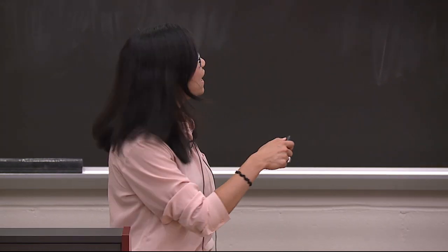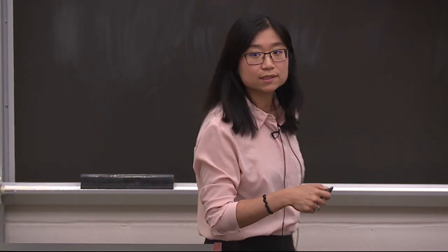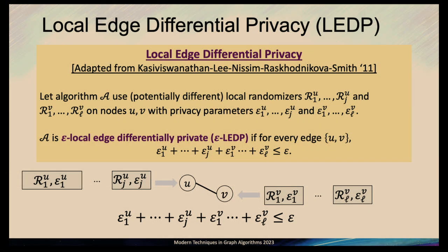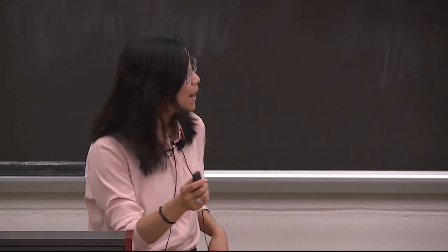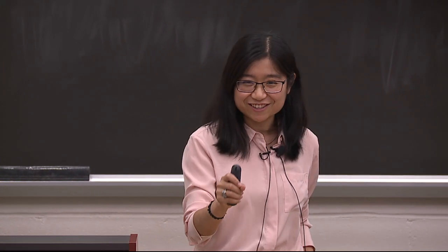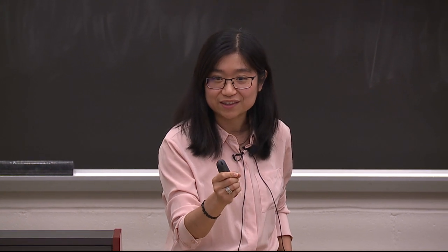Question: Why are there more randomizers — why do you need J randomizers per node? These are randomizer calls. If you have an interactive protocol, each round of the protocol you might call a number of randomizers. The J randomizers are the randomizers called over J rounds of the algorithm. J is upper bounded by L — you call at most one local randomizer for the node each round, but you don't necessarily have to call a local randomizer every round.